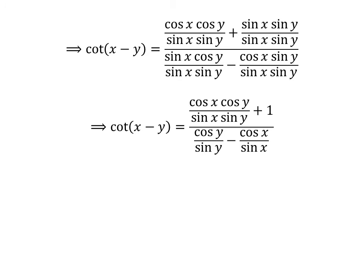After cancelling out the common factors, we are left with cotangent of x minus y is equal to cosine of x times cosine of y upon sine of x times sine of y plus 1 upon cosine of y upon sine of y minus cosine of x upon sine of x.